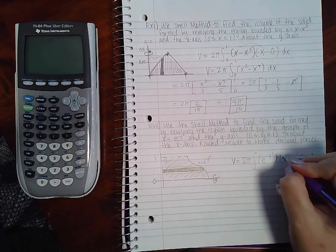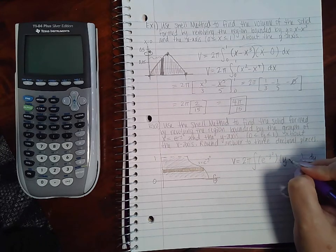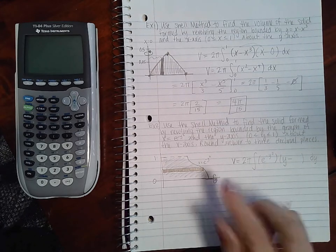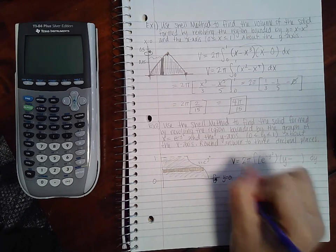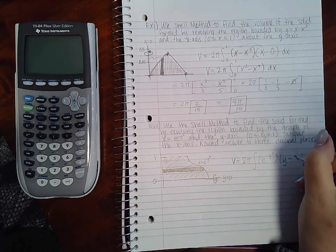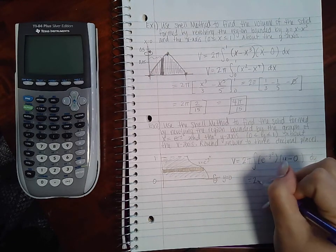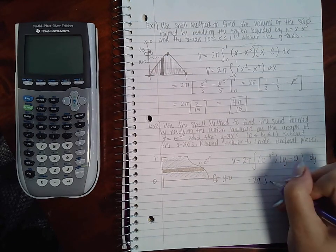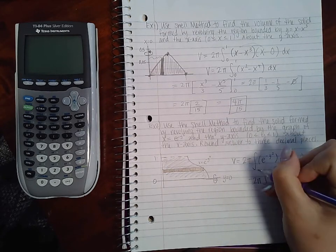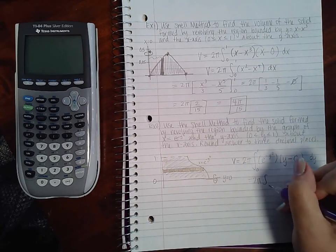Then my ρ function is going to be—notice that the region is top of the line of revolution, so I'm going to use a y to represent the region minus the value here. Well, the equation of the x-axis is y equals 0, so that value is just 0. So we end up having to integrate—I forgot to put my bounds, y value from 0 to 1.